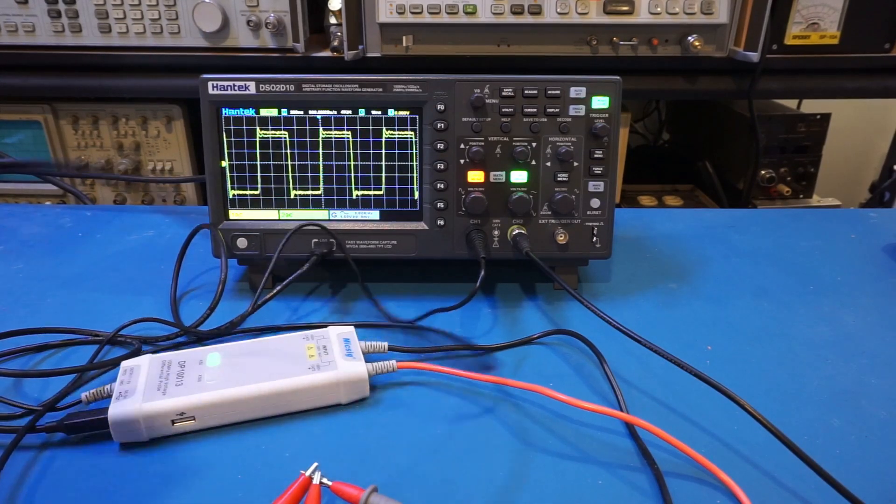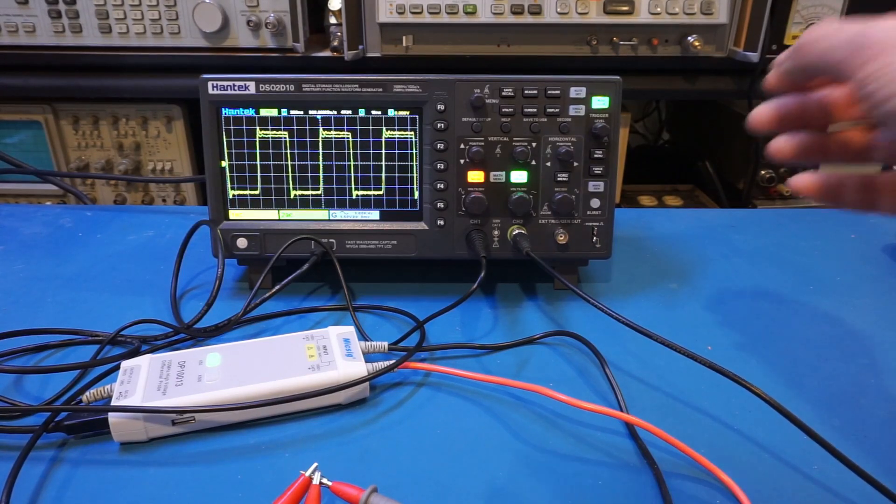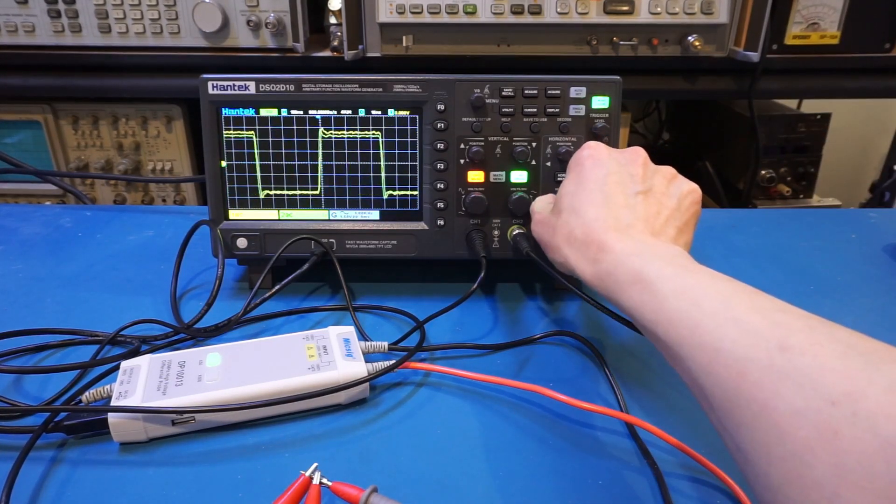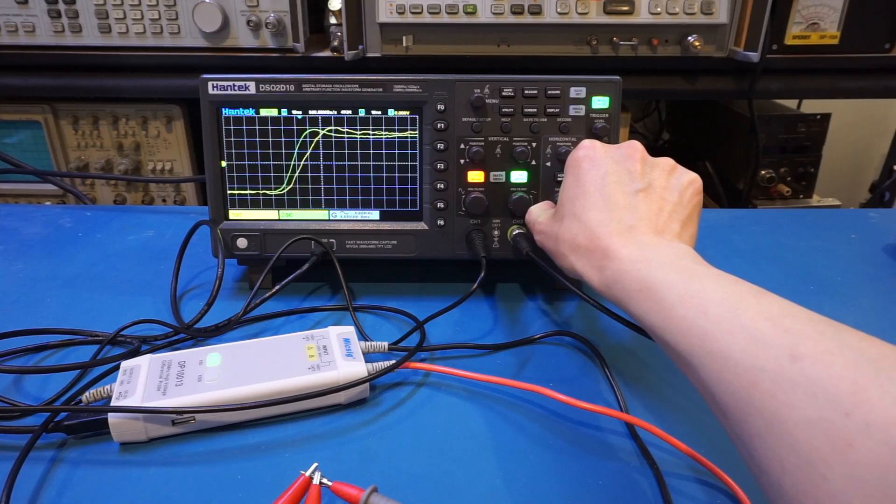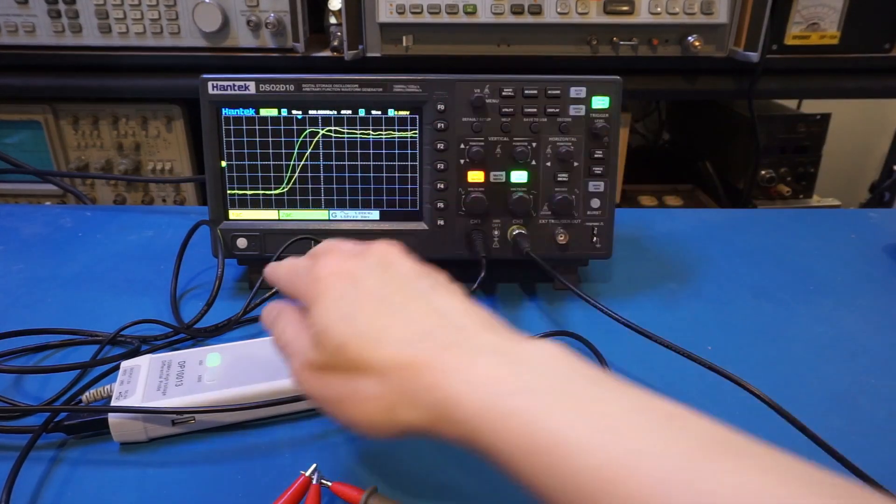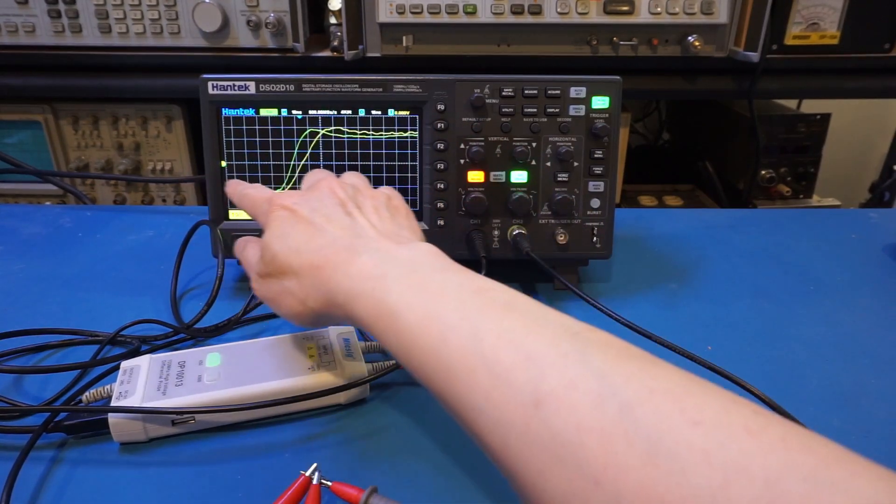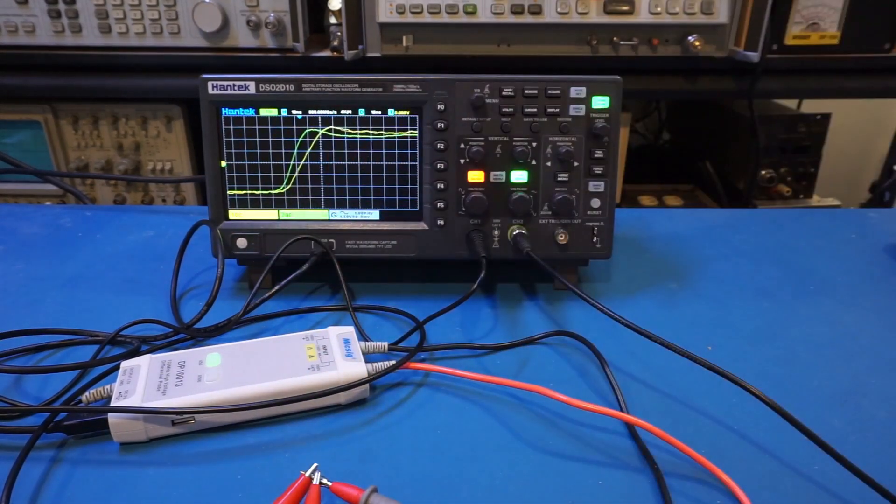Right now, the frequency is set at one megahertz. And let's zoom it in to see what we can see here. So if I started zooming in, you will notice that the rise time of that yellow signal, which is coming out from the differential probe, is slightly slower than the original trace, which is the green one.